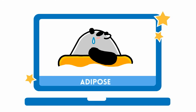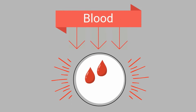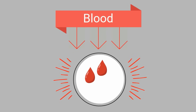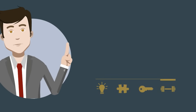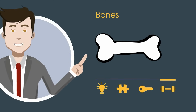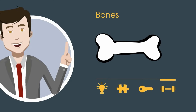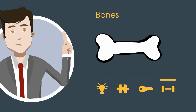Adipose connective tissue is body fat and it is used for insulation and to help store energy. Blood is considered a special type of connective tissue where the cells are separated by fluid. Bones are also considered a type of connective tissue.